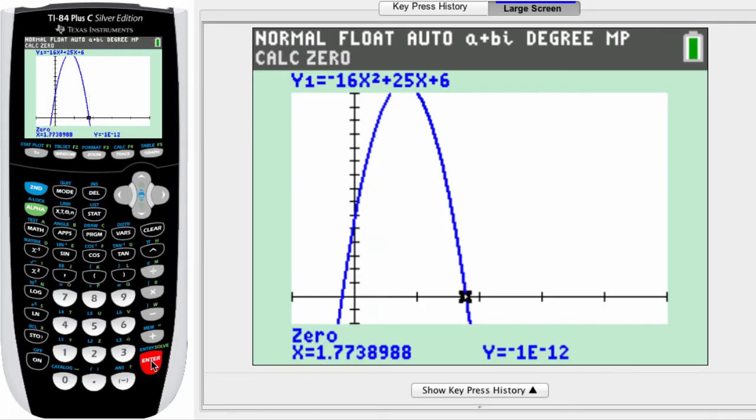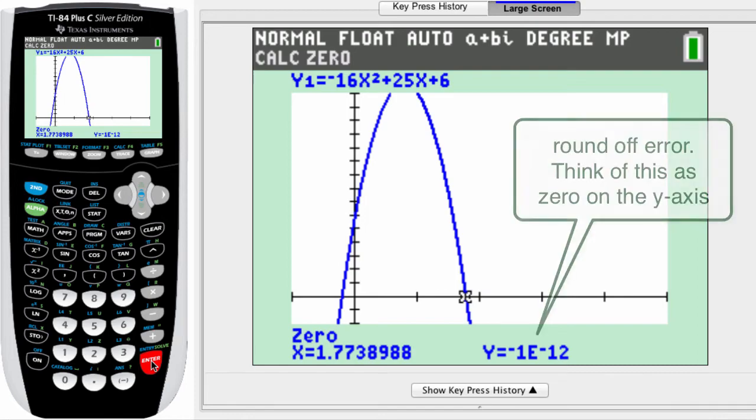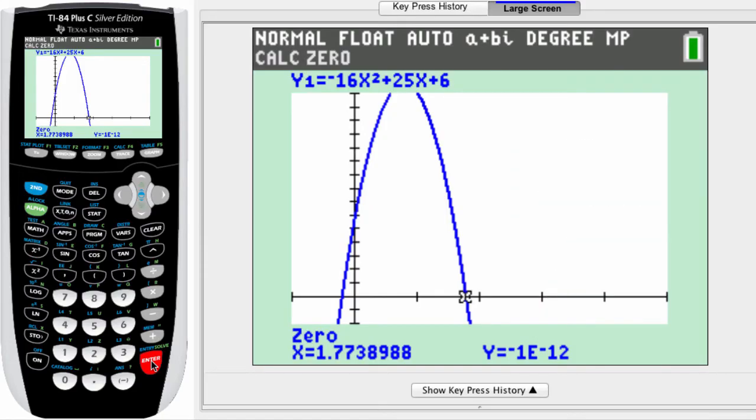Hit enter and now it's going to look between those two lines and hit enter one more time. And after a second, you'll see where the x-intercept is. It's 1.7738. Now then, you'll notice that the y says negative 1 e negative 12. Now that's what we call round-off error, and you can just interpret that to mean zero. So that means right at where y is zero, x is 1.77, and there's your x-intercept.